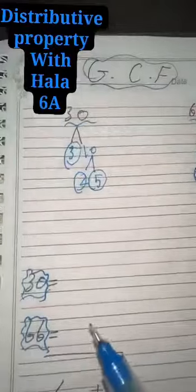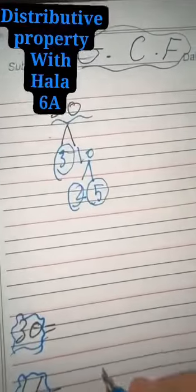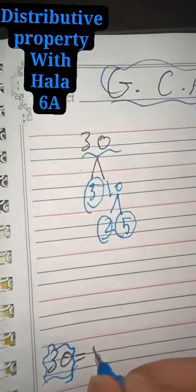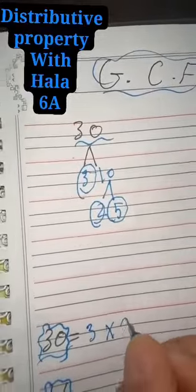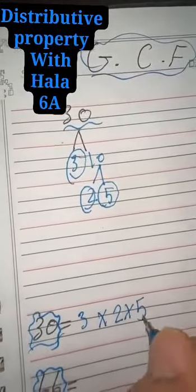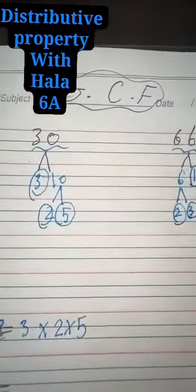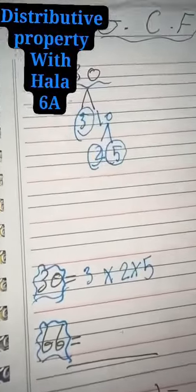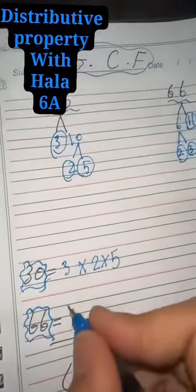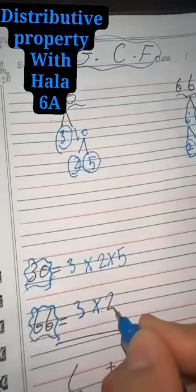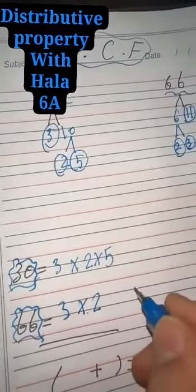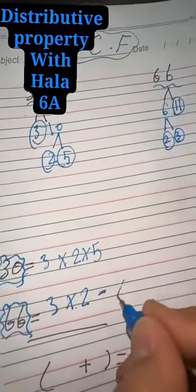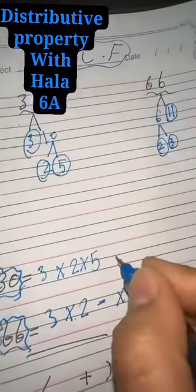Second step, we will write the prime numbers here. What are the prime numbers for 30? I mean, 3 times 2 times 5. And we will write also the prime numbers for 66. We will align the same numbers above each other. 3 multiplied by 2. Here we don't have 5, so leave this column empty. Scratch it and multiply by 11 and also scratch it from here.